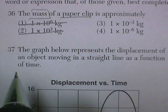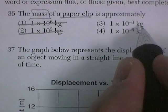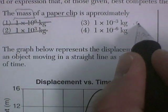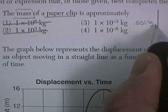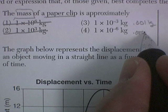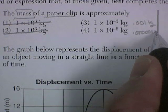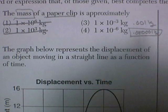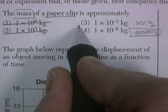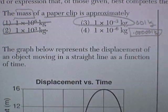This is 1 times 10 to the negative 3. That's .001 kilograms. That's one gram. And .000001 kilograms. That's really tiny. So the closest one's about a gram. That would be choice 3.